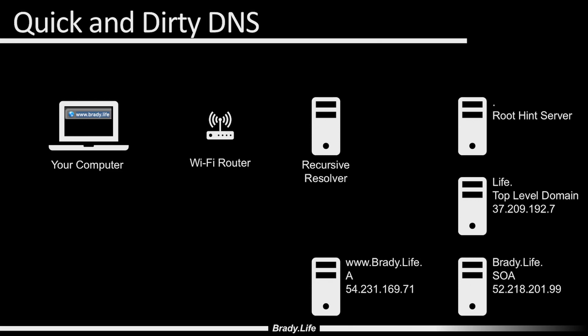It first checks its host file and its local DNS cache to see if it's been there before and doesn't have to look up this name again. If those aren't in the cache or host file, it's going to forward that request to the default DNS device in your network. In a home network, this will be your Wi-Fi router. It wants to know who is www.brady.life, so it sends this over UDP port 53.